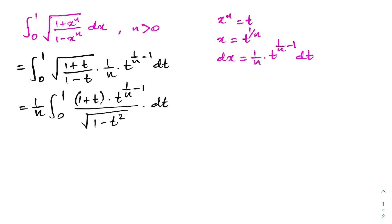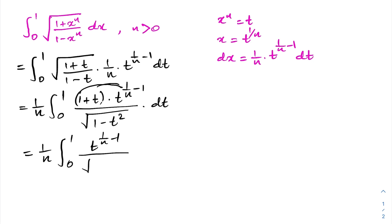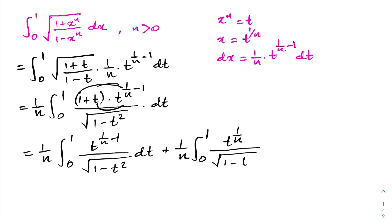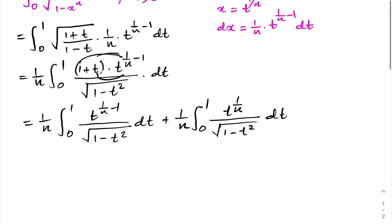We can now multiply (1 plus t) by t to the (1 over n minus 1) and split this integral into two different integrals. We have 1 over n times the integral from 0 to 1 of t to the (1 over n minus 1) over the square root of (1 minus t squared) dt, plus the integral of t to the (1 over n) over the square root of (1 minus t squared) dt.